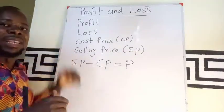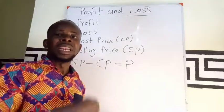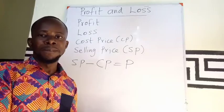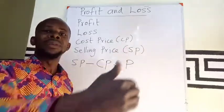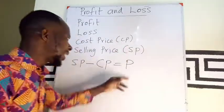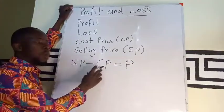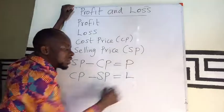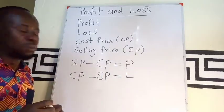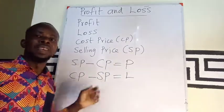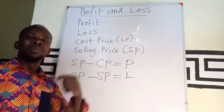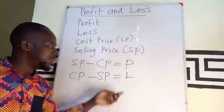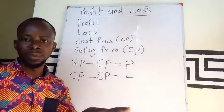If the selling price is now less than the cost price, it means the cost price is bigger. In that case I am incurring a loss. To get a loss, it means your cost price is bigger than the selling price. So the moment the cost price is bigger — or the selling price is less than the cost price — it means you have incurred a loss.